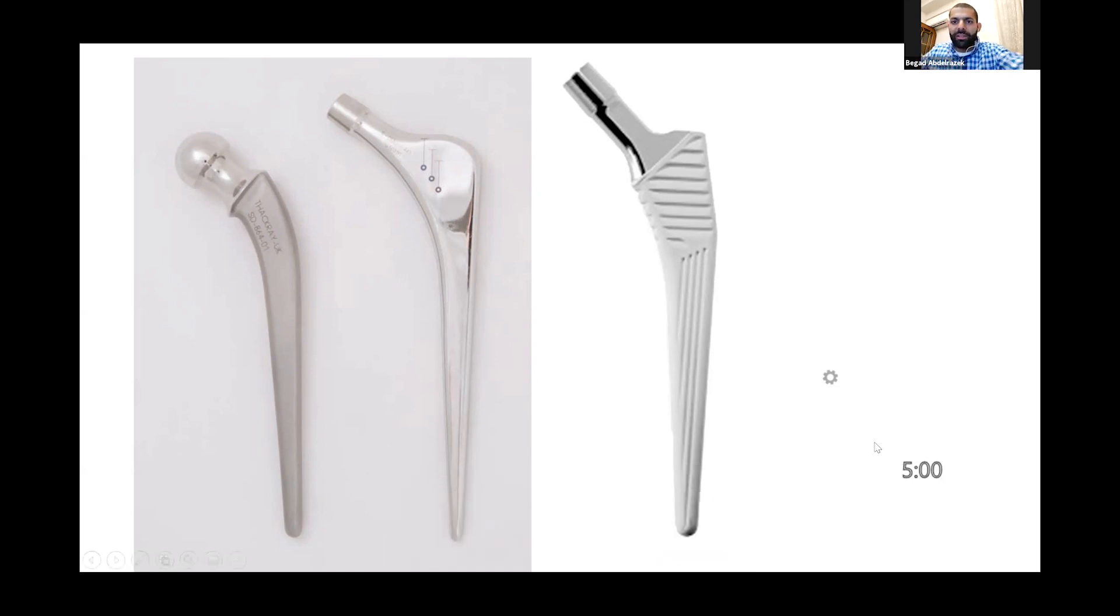Hi again, hi Waleed. This is another viva scenario regarding the different stem designs used in total hip replacements. Waleed, can you have a look at the picture and tell me what you think? What are these? Yeah, these are three different stems. The one to the right is an uncemented stem, then the two to the left are cemented stems.